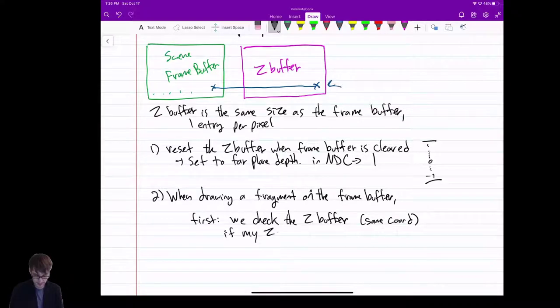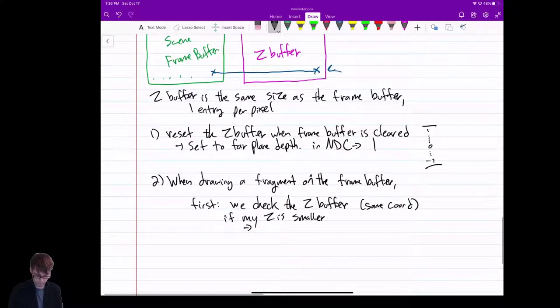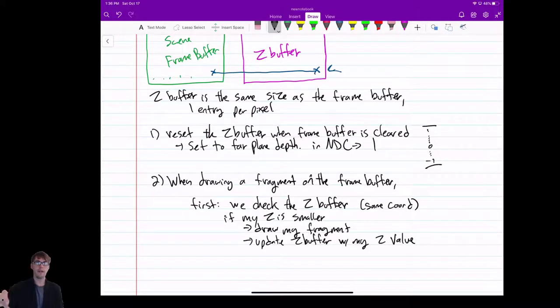If my Z is smaller, it means that I'm in front of what's already there. I can replace it. I draw my fragment. So if there's, if my Z is 0.1 and their Z is 1, I'm in front of that, so I can replace that fragment. But I also have to make sure to update the Z Buffer with my Z value, so that if someone's writing to this fragment but they're behind me, they'll check the Z Buffer, aha, someone's already in front of me at this spot.